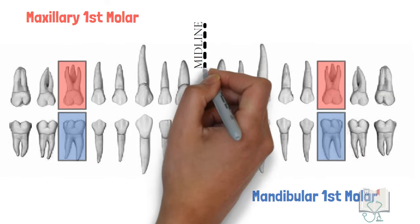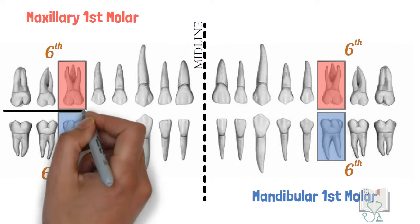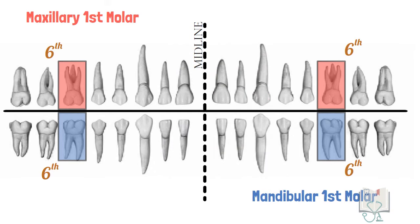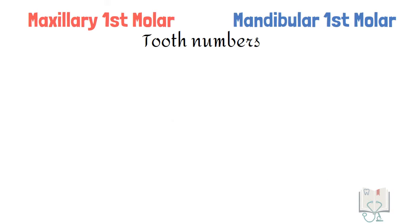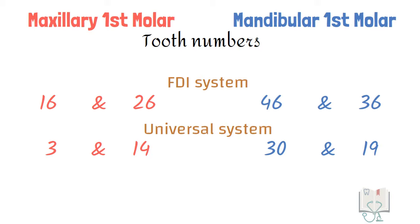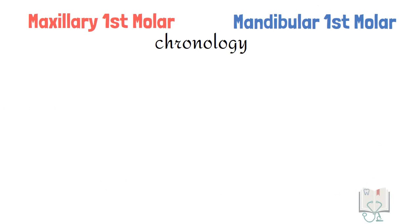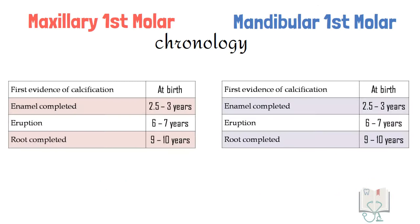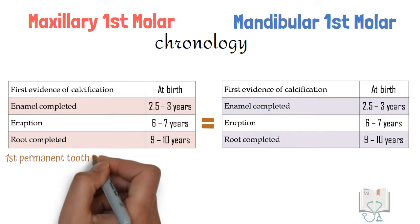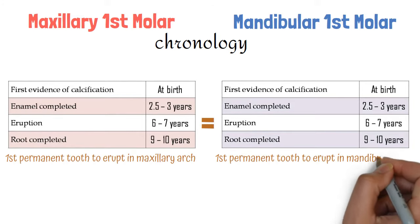From the midline, both first molars are the sixth tooth but are on different arches, which gives them different tooth numbers in various tooth notation systems. Coming to chronology, both molars erupt at an age of around 6 to 7 years and are the first permanent teeth to erupt in their arches.